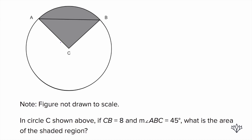Alright, so this question looks a little bit more complicated than it actually is. Here's what we have. In circle C shown above, if CB is 8 and the measure of angle ABC is 45, what's the area of the shaded region? Alright, so let's go step by step. First of all, what do we know? CB is 8. What is CB? Let's take a look at it.